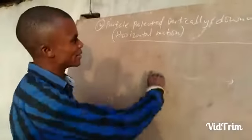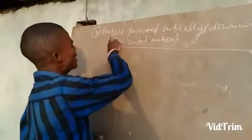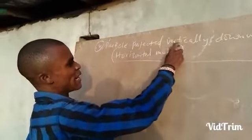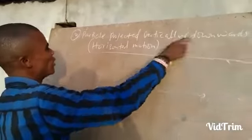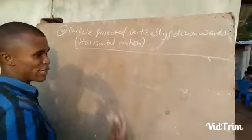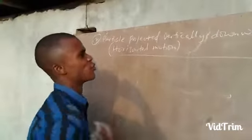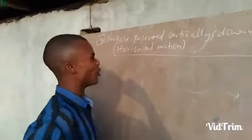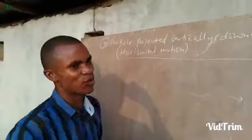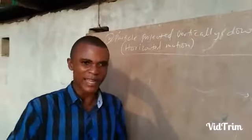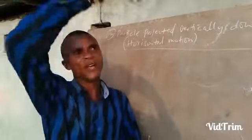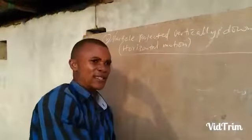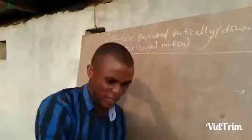We look at the second case. The second case is a particle projected vertically downwards. That is the case where you are now above the ground. Let us say you are at a height, then you drop an object — that object is now falling.